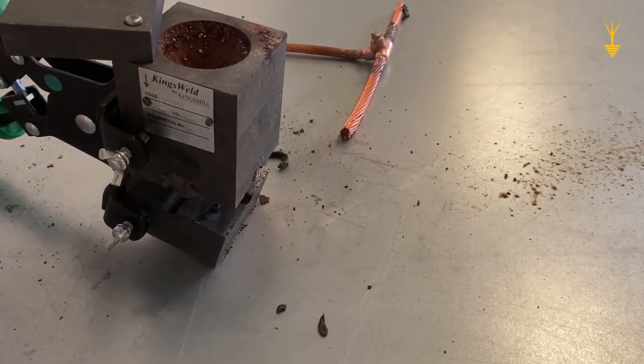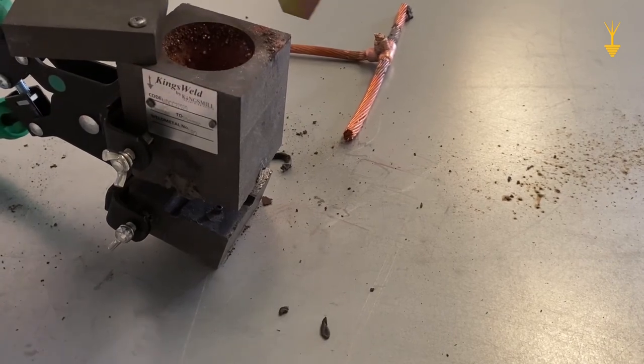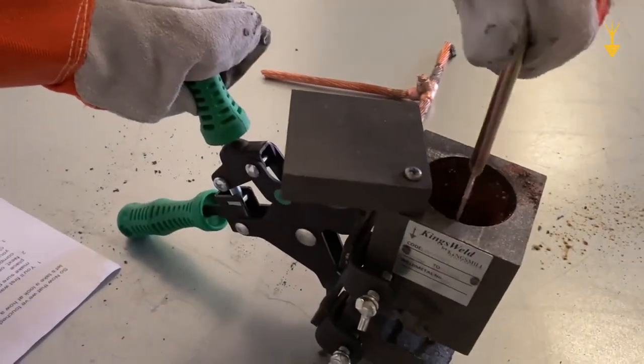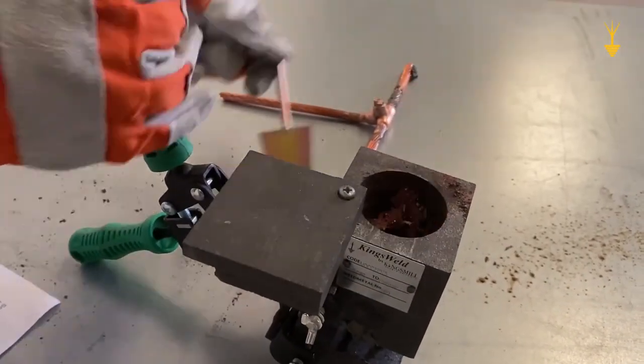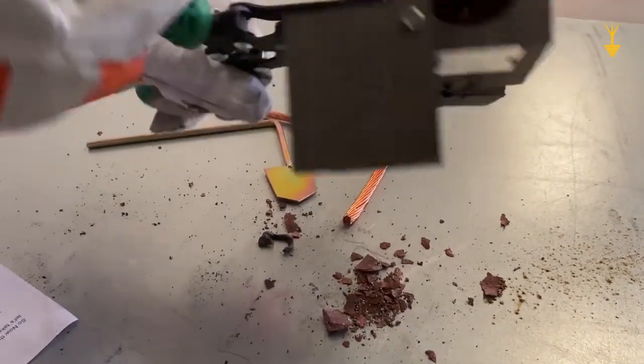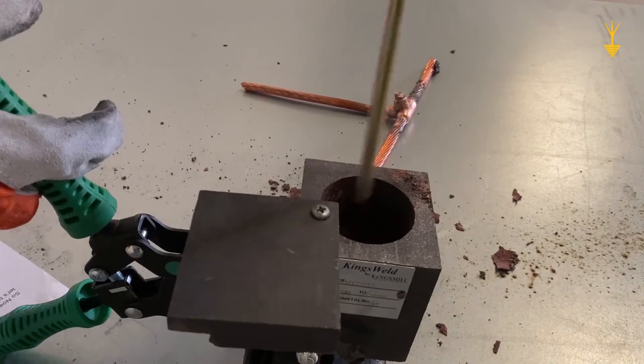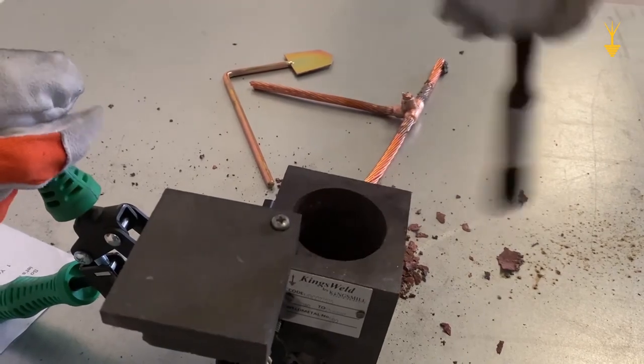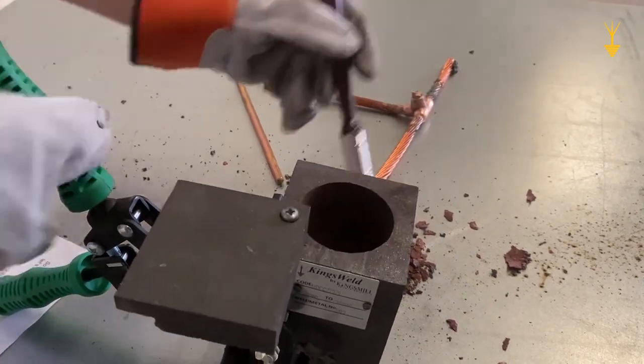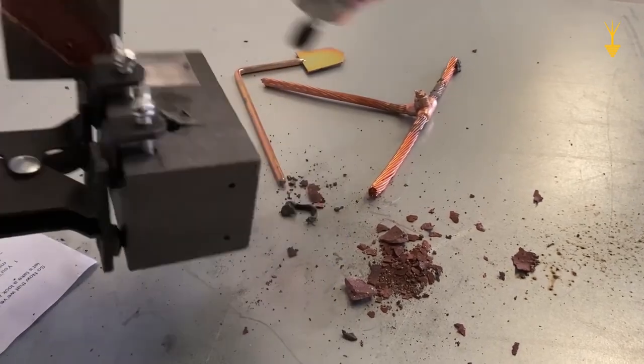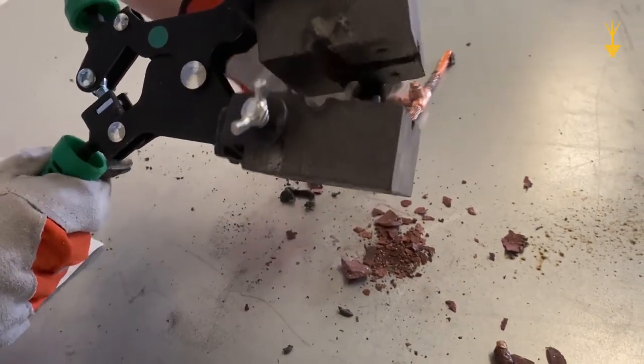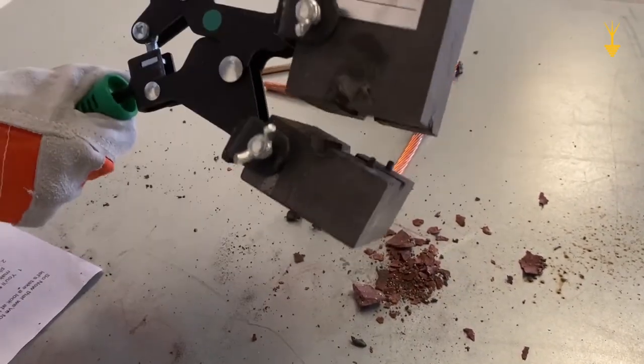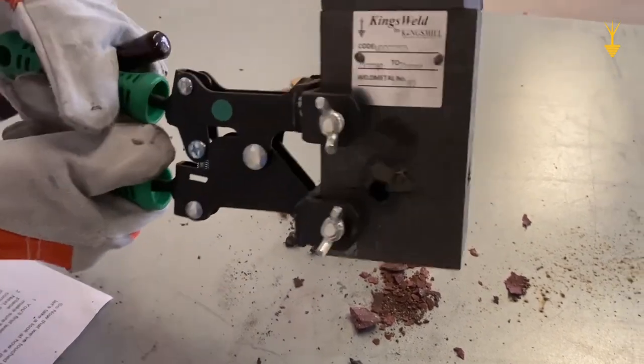Now, the last step is to clean out the inside. So, what we do is we use the scraper tool to clean out the slag so that we make sure our mold is set to go, making sure all the slag is taken out. And now, our mold is set for another one. You're ready to make your next joint.